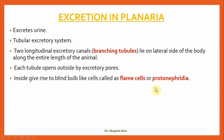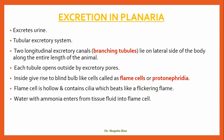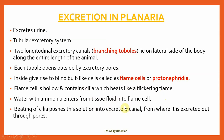The excretory organ of planaria is protonephridia. Flame cells or protonephridia are hollow and contain cilia that beat like a flickering flame — that's why they are called flame cells. Water with ammonia enters from the tissue fluid into the flame cells, and the beating of the cilia pushes this solution into the excretory canal, from where it is excreted out through the excretory pores.